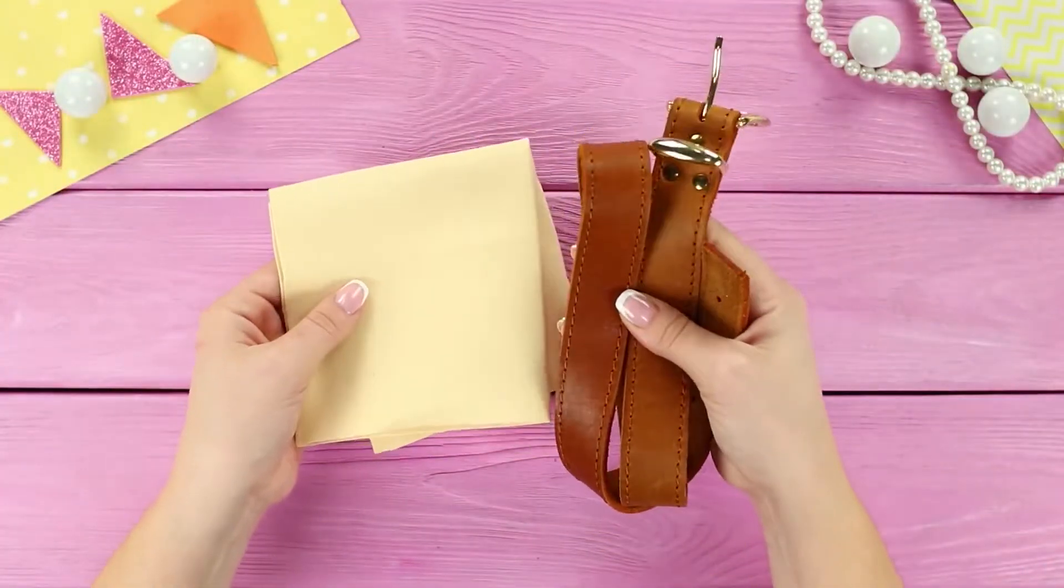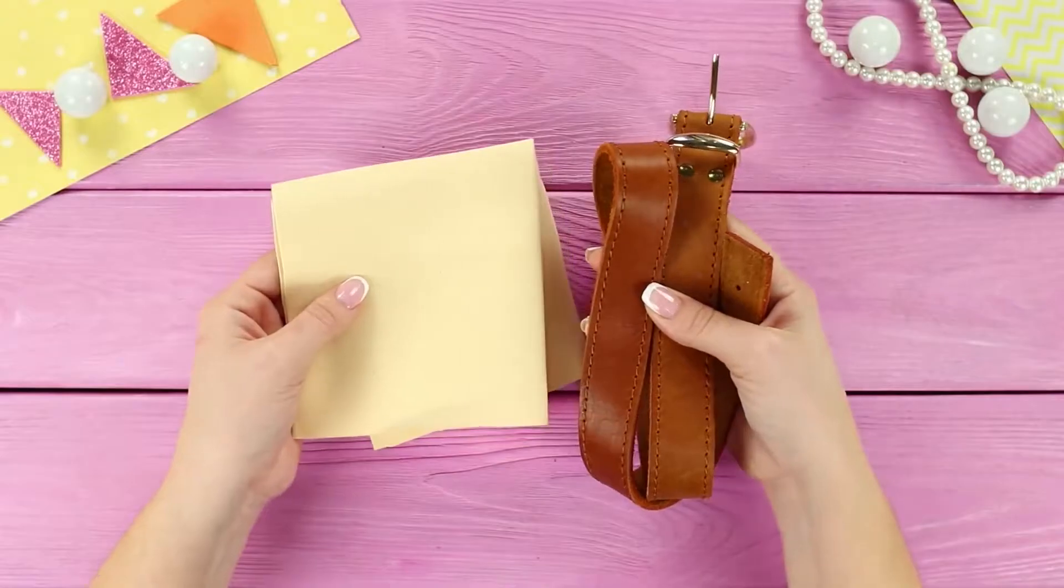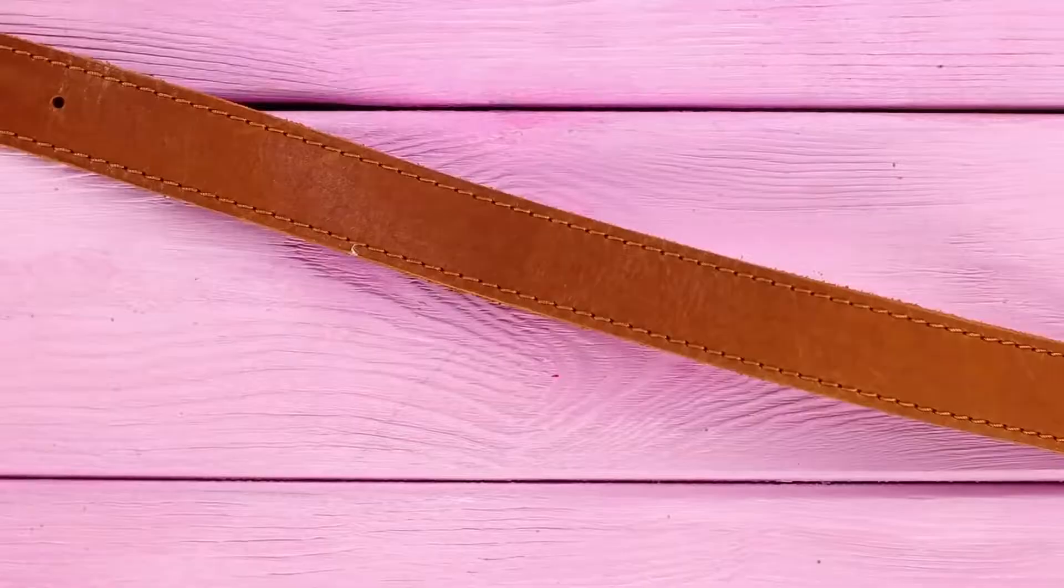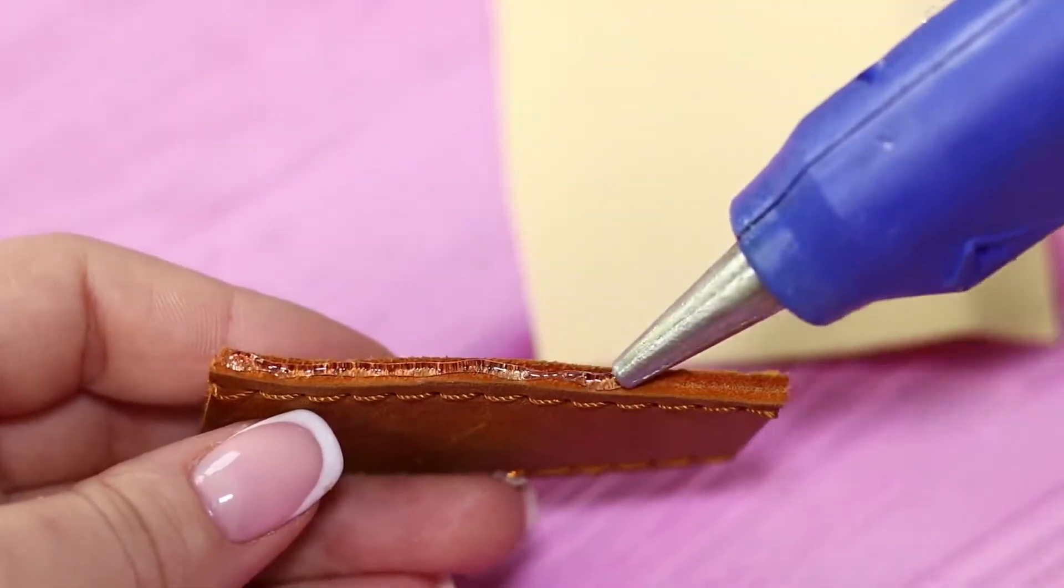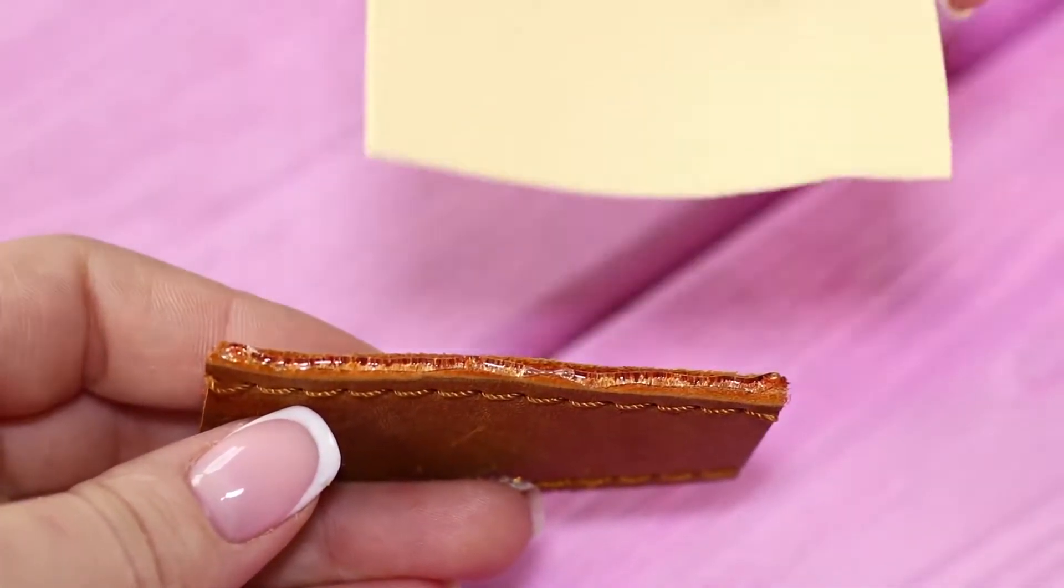For the next idea, take an old leather belt and a piece of a foam rubber sheet. Cut the belt into parts. Cut two squares from the foam rubber sheet and fasten the foam rubber sheet to the leather with a hot glue gun.